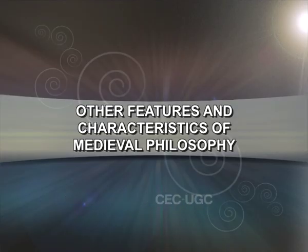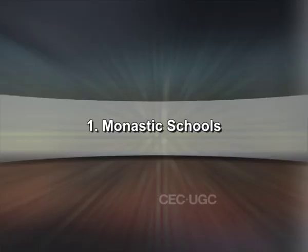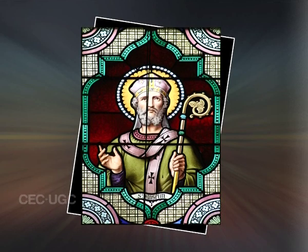Other features and characteristics of medieval philosophy. Rise of new forms of school. Another important feature of medieval philosophy was the influence of new forms of schools. There were four main types of educational practices in medieval Europe, and these forms of education had heavy influence on the development of philosophical ideas. One: monastic schools. This was a type of educational practice that existed even in the early medieval period. These schools were associated with monasteries, and some of the major philosophical works of the medieval period came out of such schools. For example, St. Anselm of Canterbury wrote some of his important works at the monastic school of Bec.